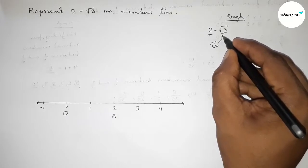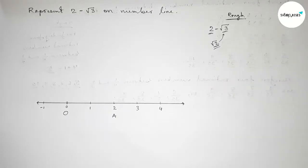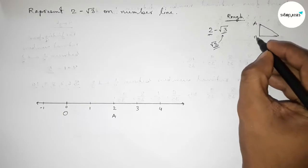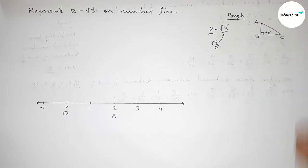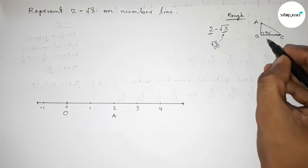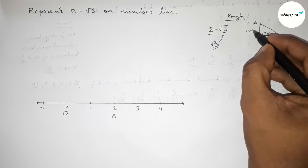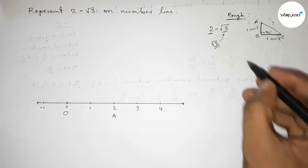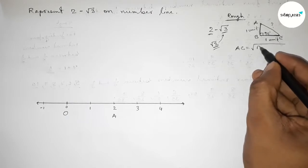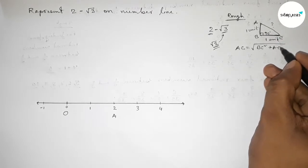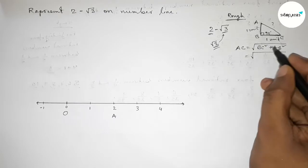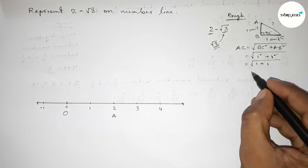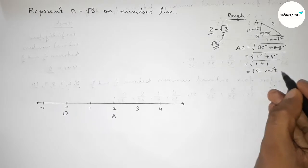First talking about root 2. Roughly drawing here a right angle triangle ABC with 90 degrees. If we take the base BC equal to one unit length and the perpendicular AB equal to one unit length, then by Pythagoras theorem the hypotenuse AC equals root of (BC² + AB²), which is root of (1² + 1²) = root of 2 unit.